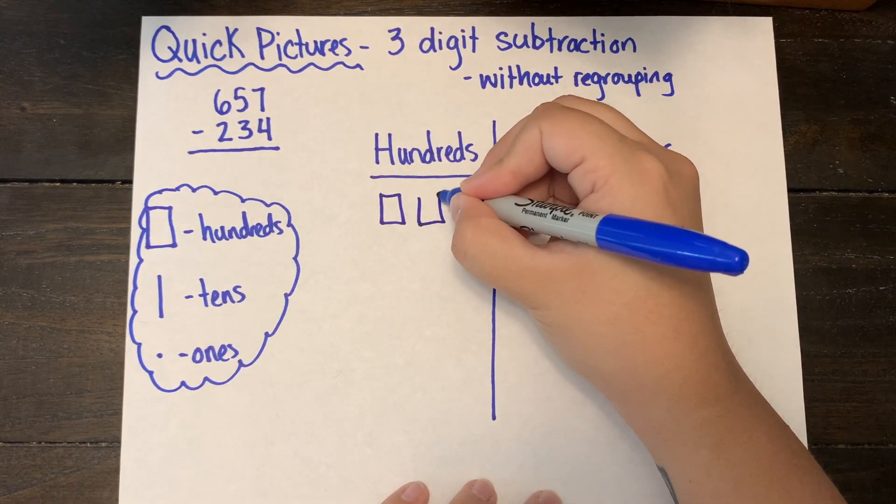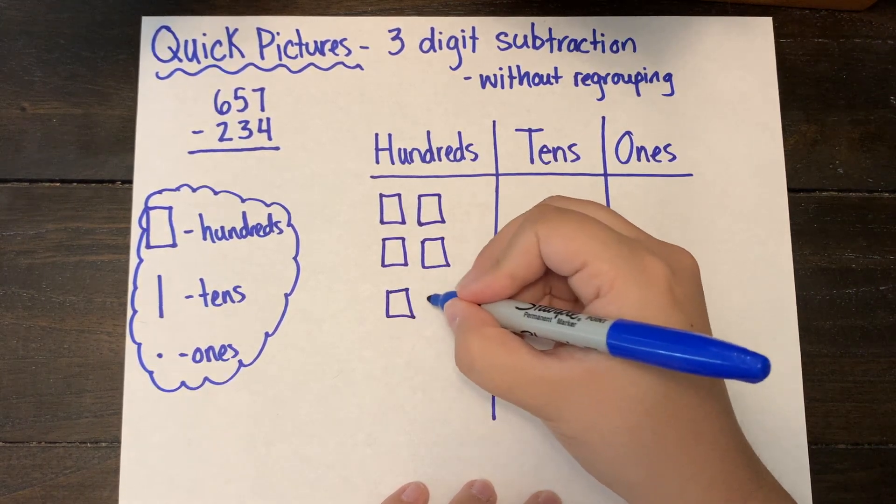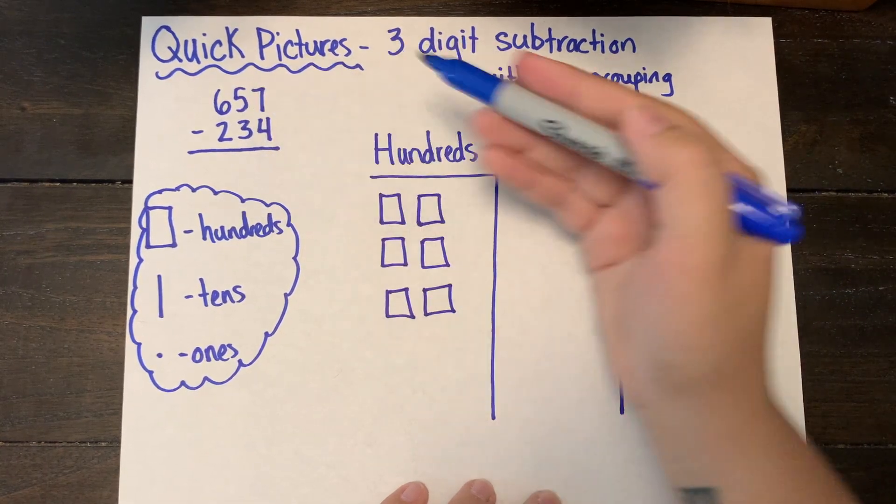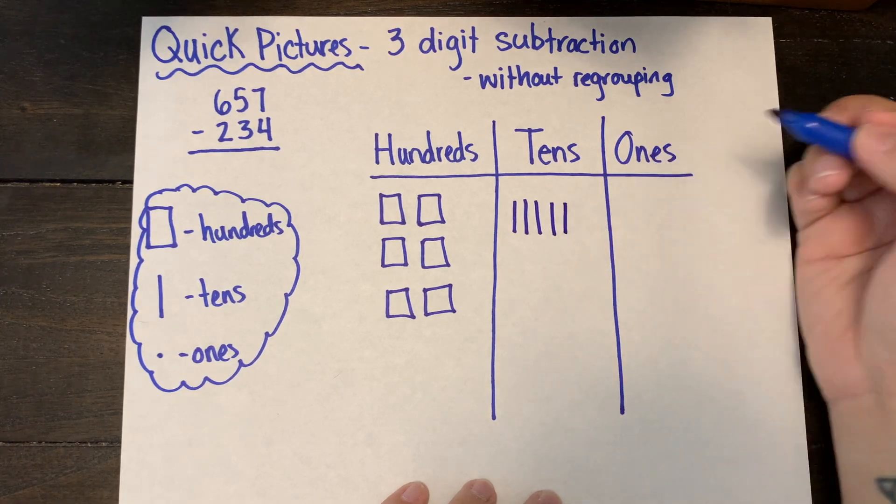I'm going to take that away from the minuend. I am not going to draw the subtrahend. So right now I'm just drawing six hundreds, five tens, and seven ones.